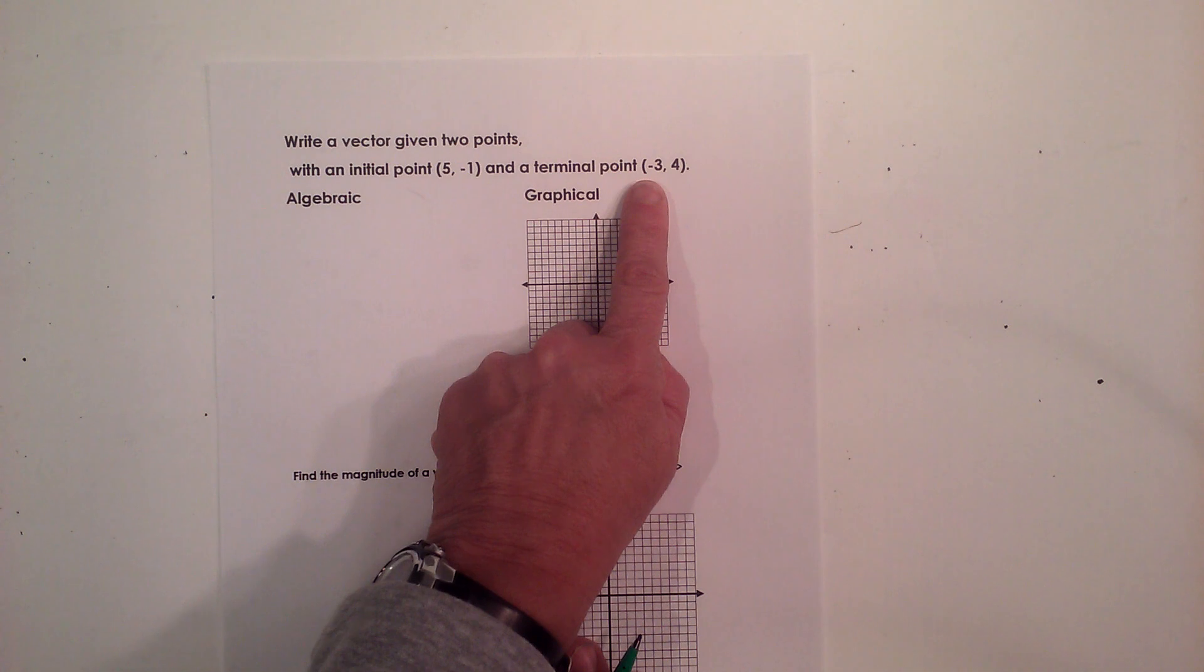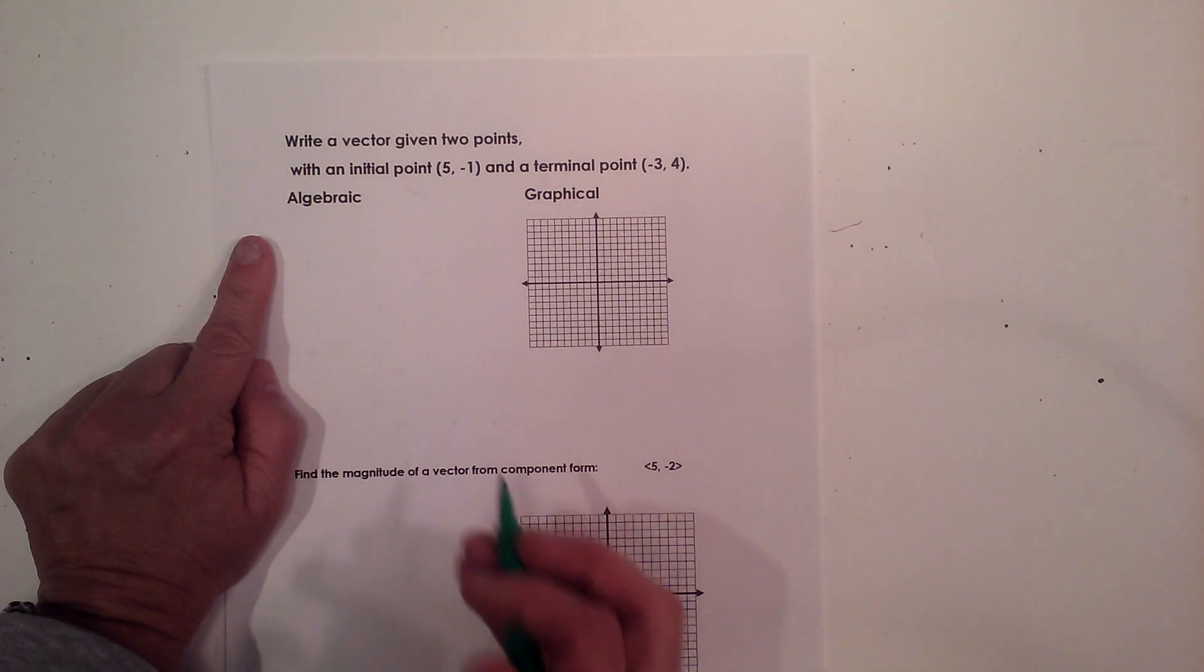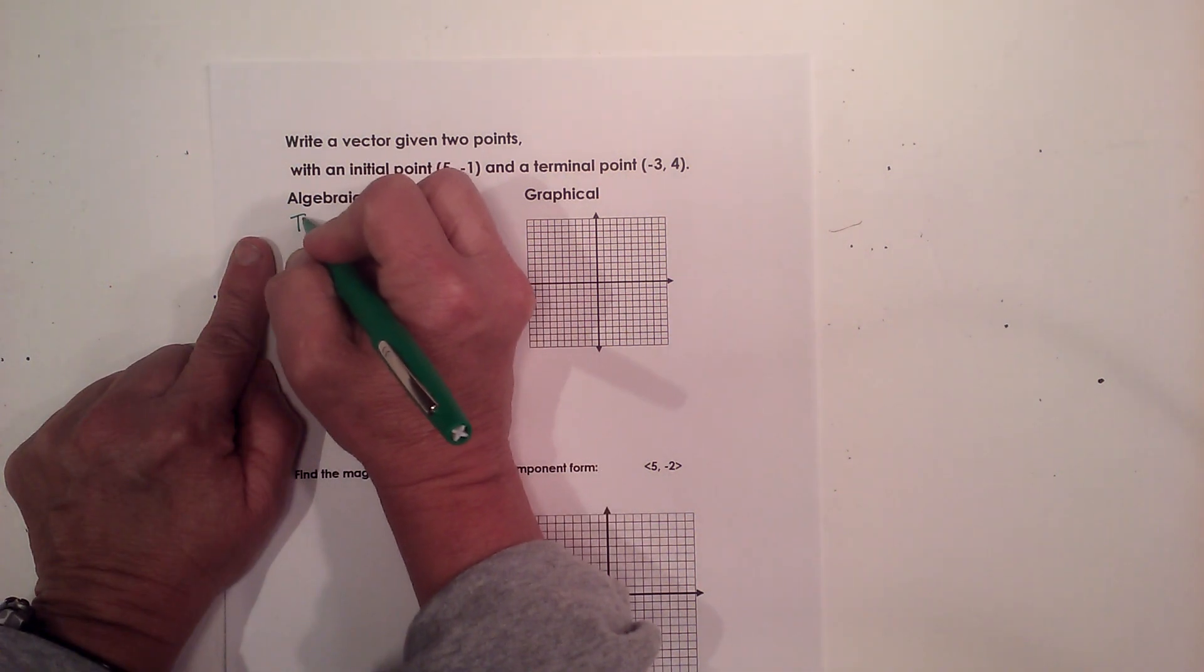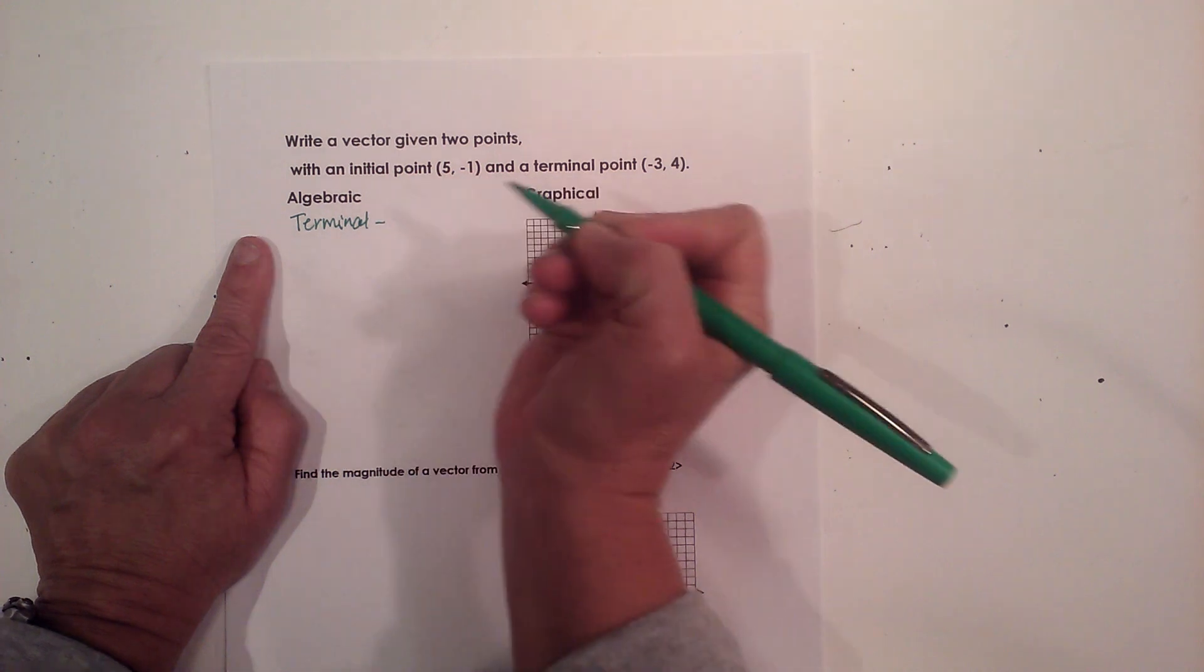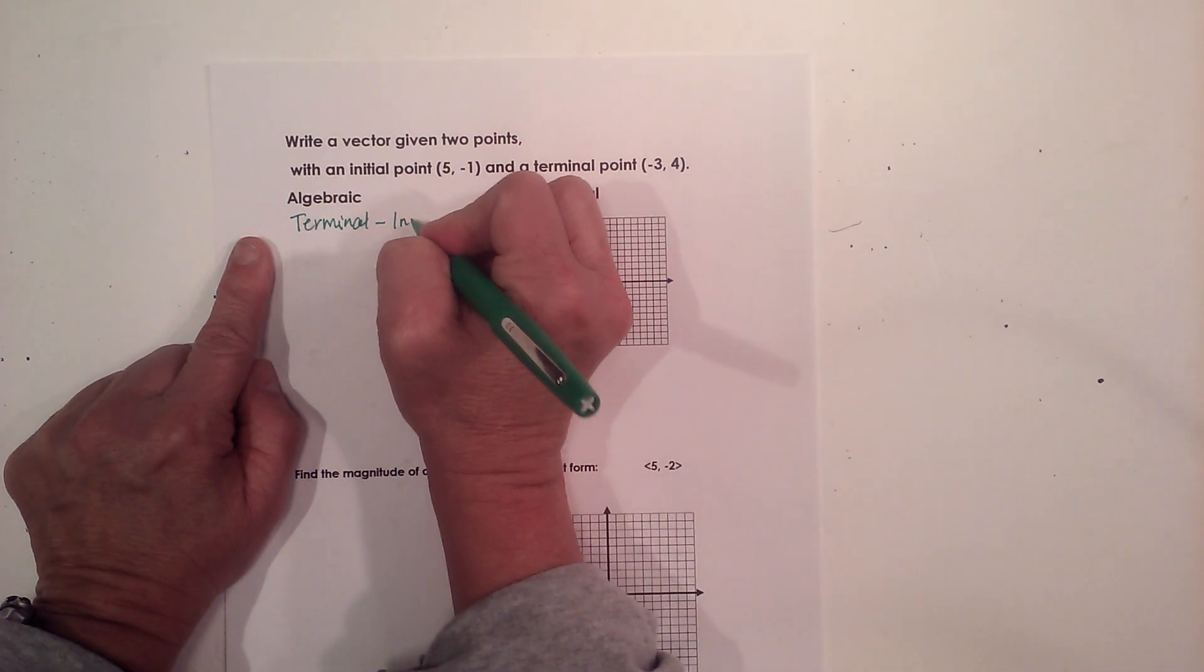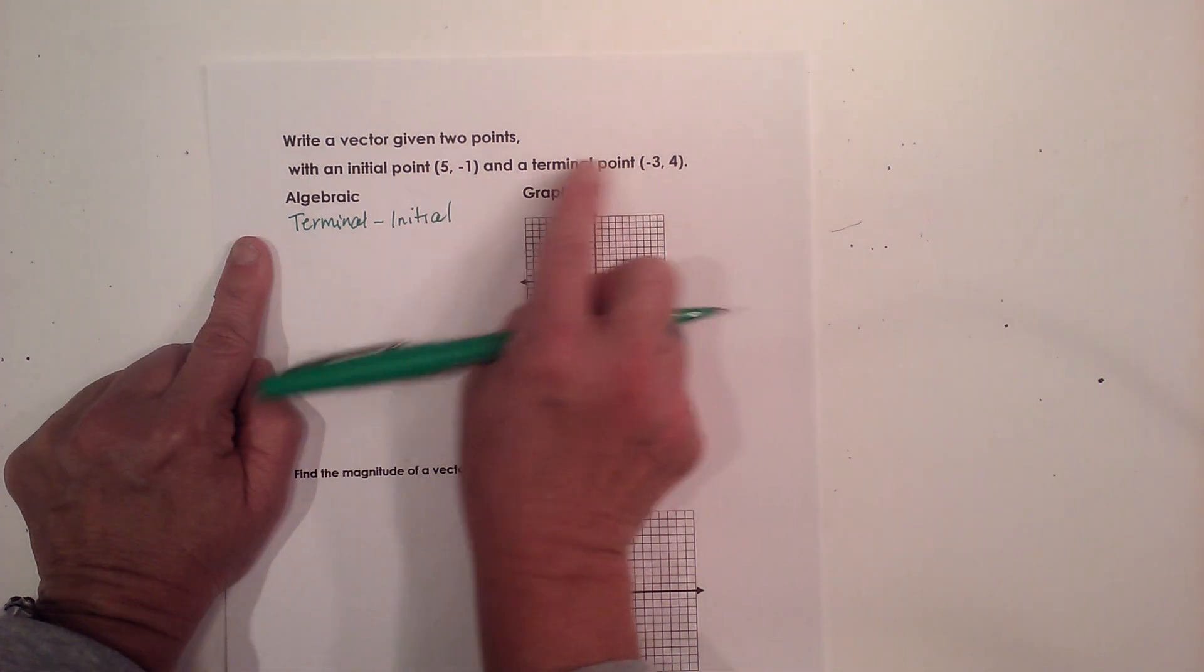So the formula to find the vector algebraically is the terminal point minus the initial point. So I'm going to do that for my horizontal direction and my vertical direction.